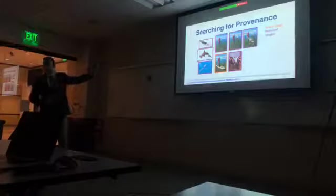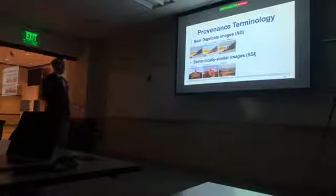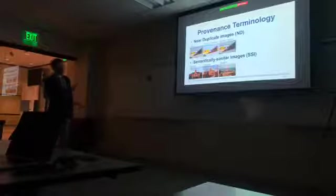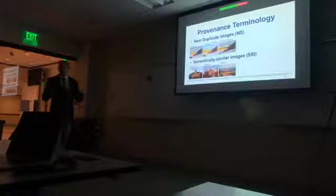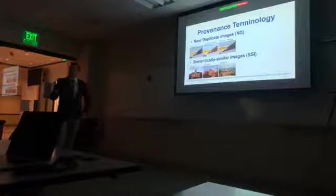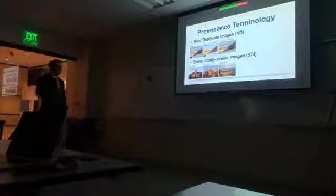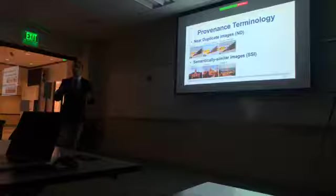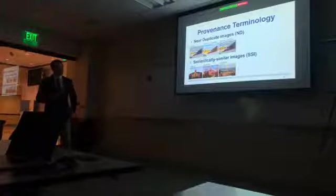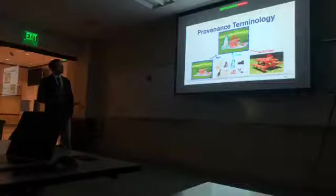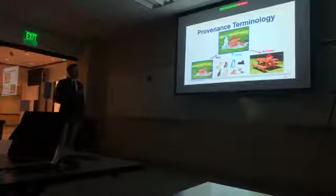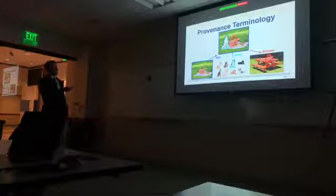So, before we move on to solving this particular type of retrieval problem, we'll define a couple of the pieces of terminology we have. We have near-duplicate images. These are one type of image we want to retrieve. They're images that are structurally identical, however, have been changed in some photometric way, like cropping or exposure or some type of filter. And then there's semantically similar images, which may be images of the same instance of an object or place or person at different angles or cameras or times.